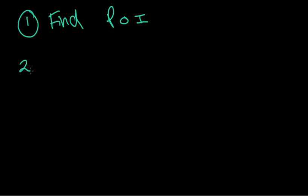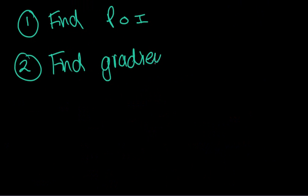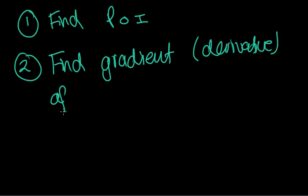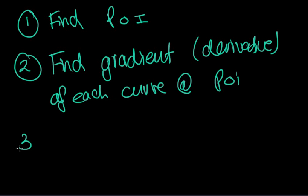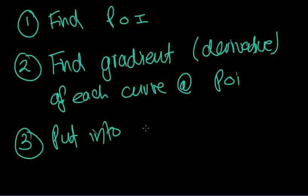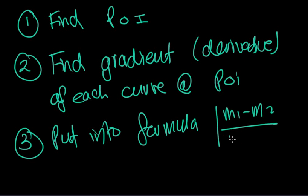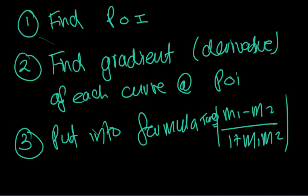Let's reflect on the three steps. Step 1: find the point of intersection. Step 2: find the gradient — the derivative — of each curve at the point of intersection. Step 3: put the gradients into the formula tan θ equals the absolute value of (m1 minus m2) all over (1 plus m1 times m2).